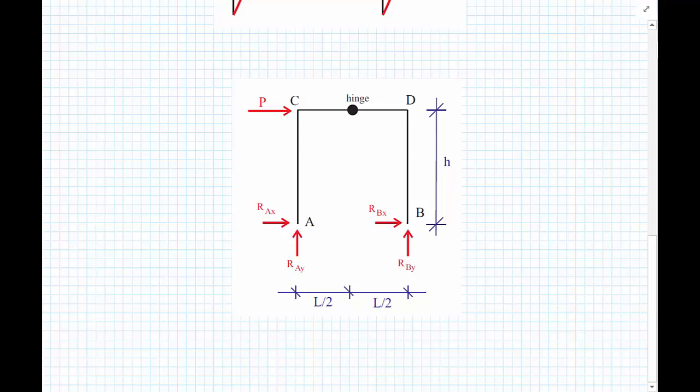We have horizontal supports where we cannot generate enough equations to be able to quantify what RAX or RBX is. So we're going to make an assumption, and the assumption is we're going to assume that RAX is equal to RBX and is equal to half of the load. So each of the columns is going to take half of the horizontal loading, and that seems a reasonable assumption to make.